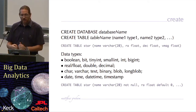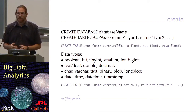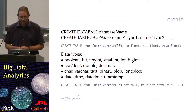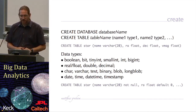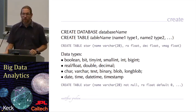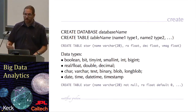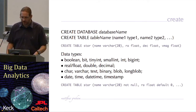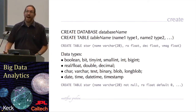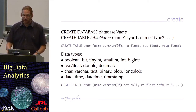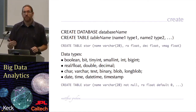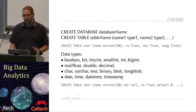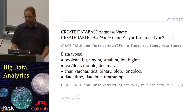I can specify further constraints on particular columns when using create table. I can say that the name field has to have a value — it cannot be null. If a value is not given when putting data into my database, a constraint will be raised. I can also put a default value for a particular column — for example, in the RA column I'm setting a default value of zero — and there are further constraints I can put on.